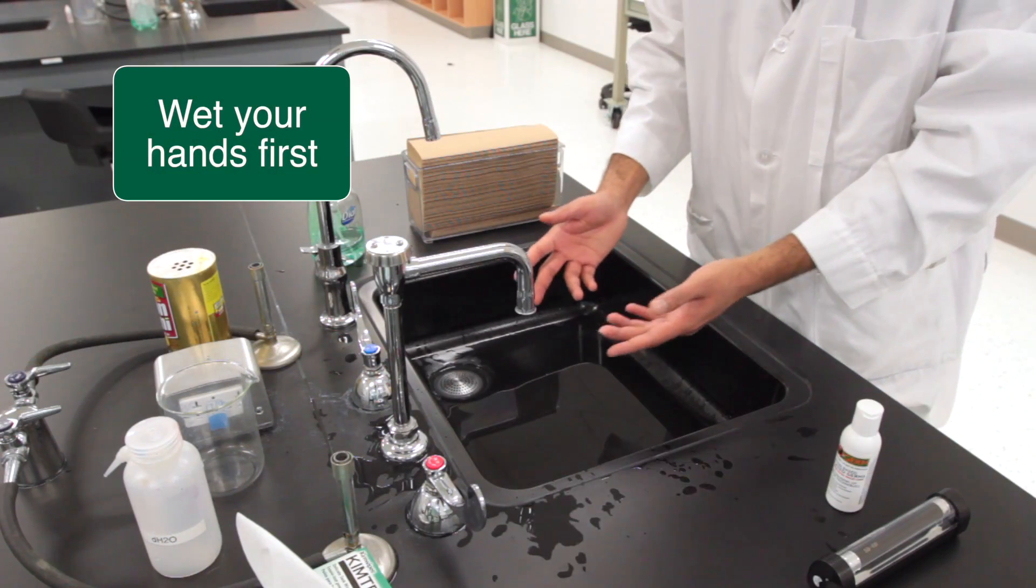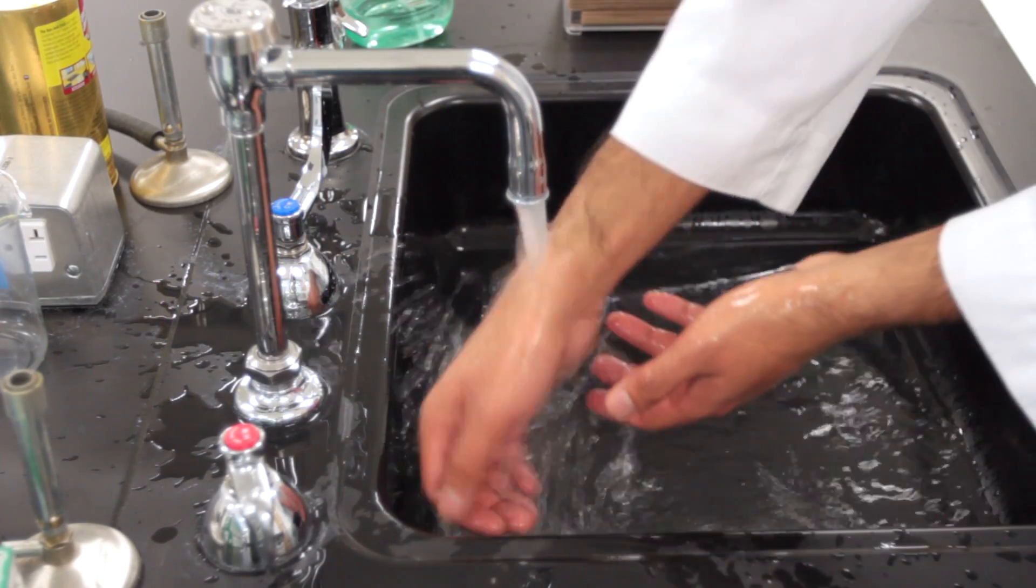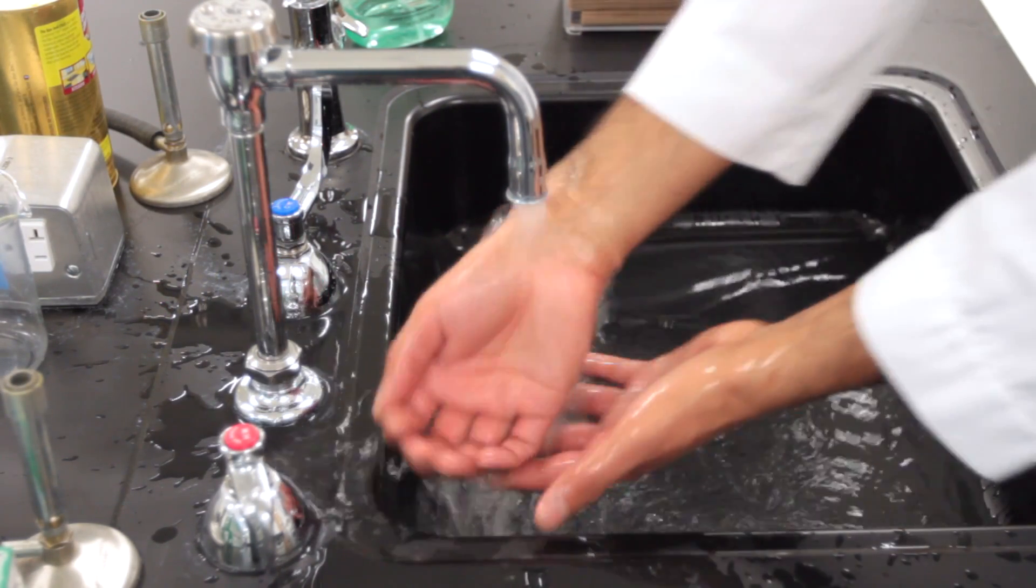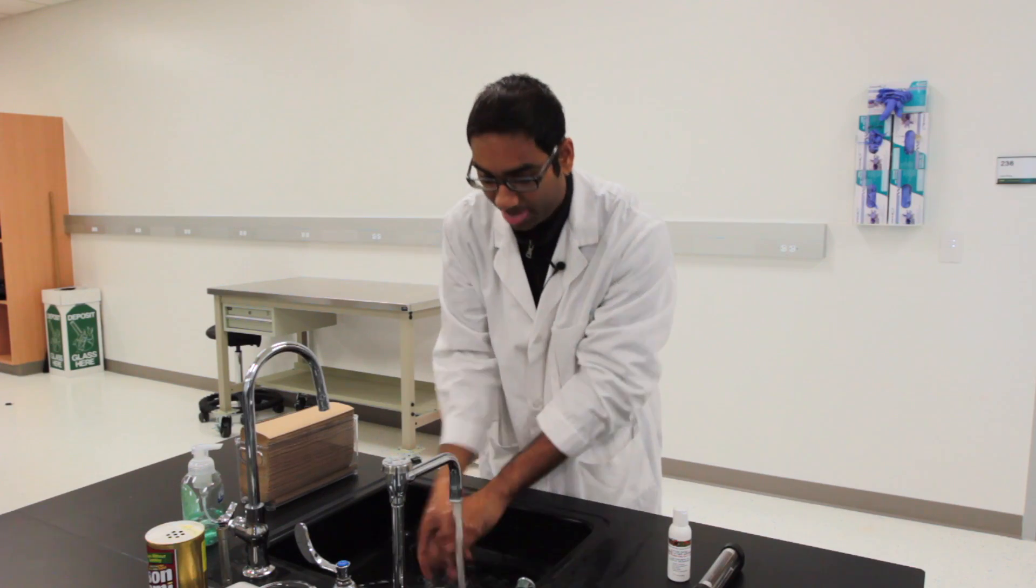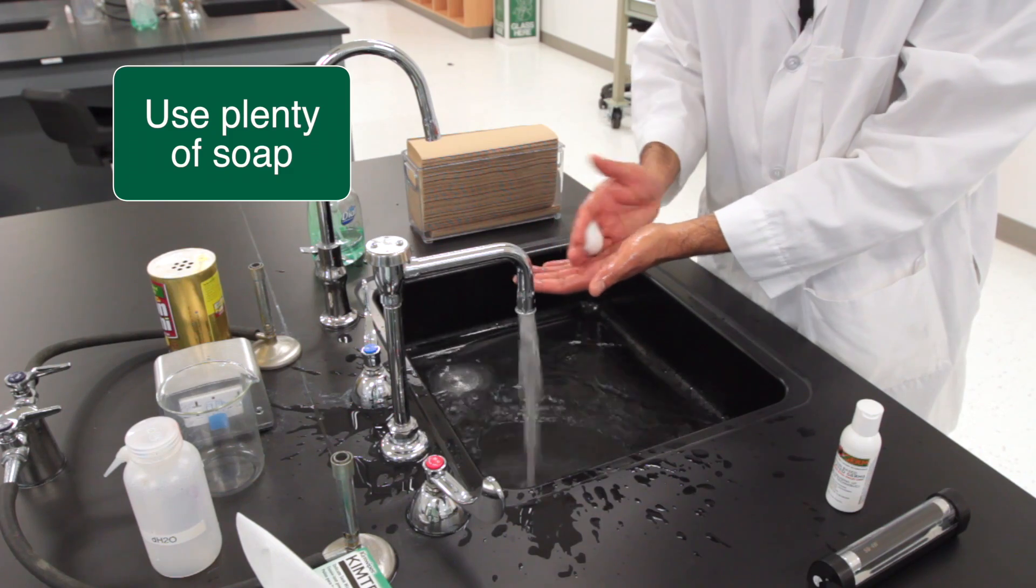Wetting your hand is the first step in hand washing. Make sure you are running the water all over. After it's wet, you can use the soap. Have enough soap that you can go all over your hands.